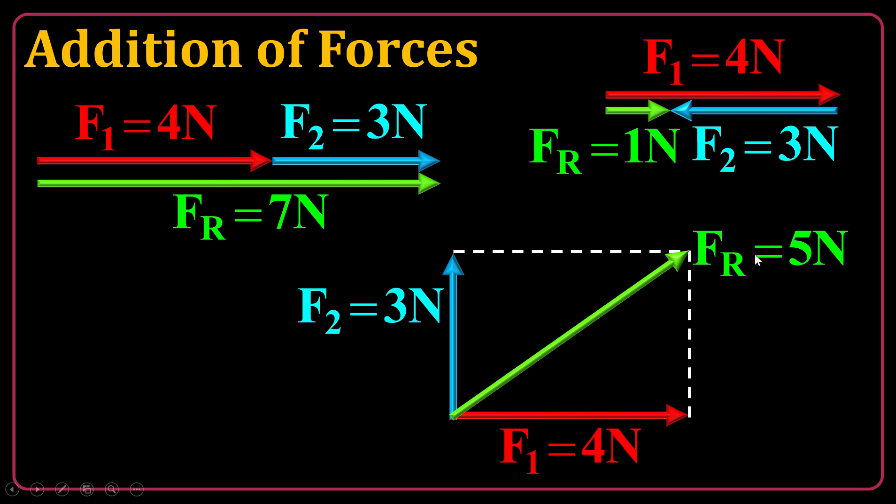This is five newton based on the Pythagoras theorem, because Fr is going to be square root of three square plus four square. So it's five newtons. But the cases are not always like that. So we will have a full discussion about vector analysis to learn much more complicated cases.